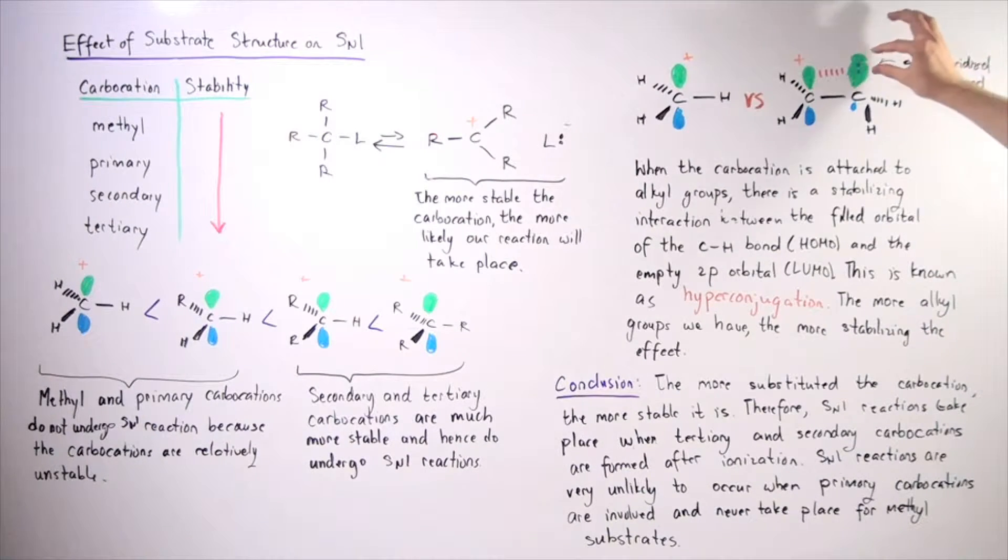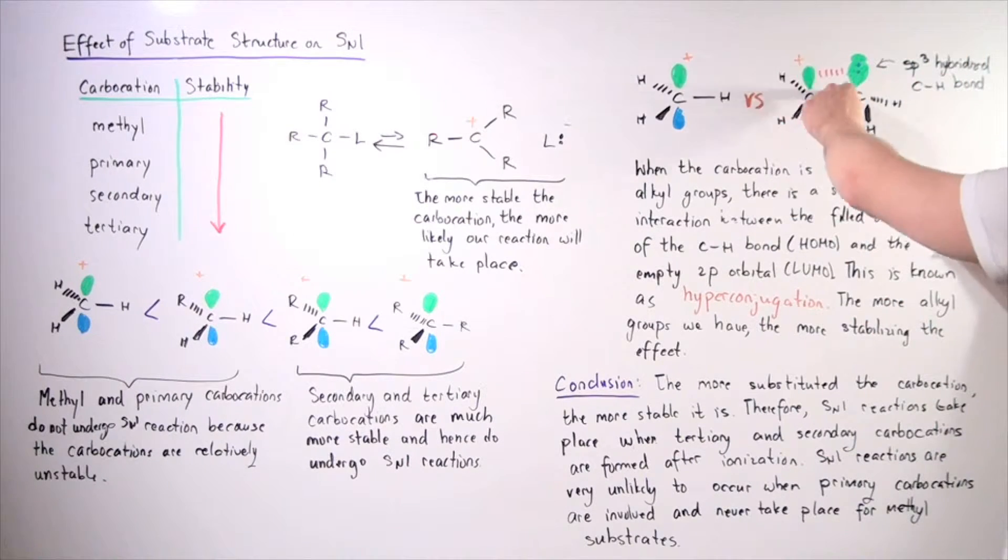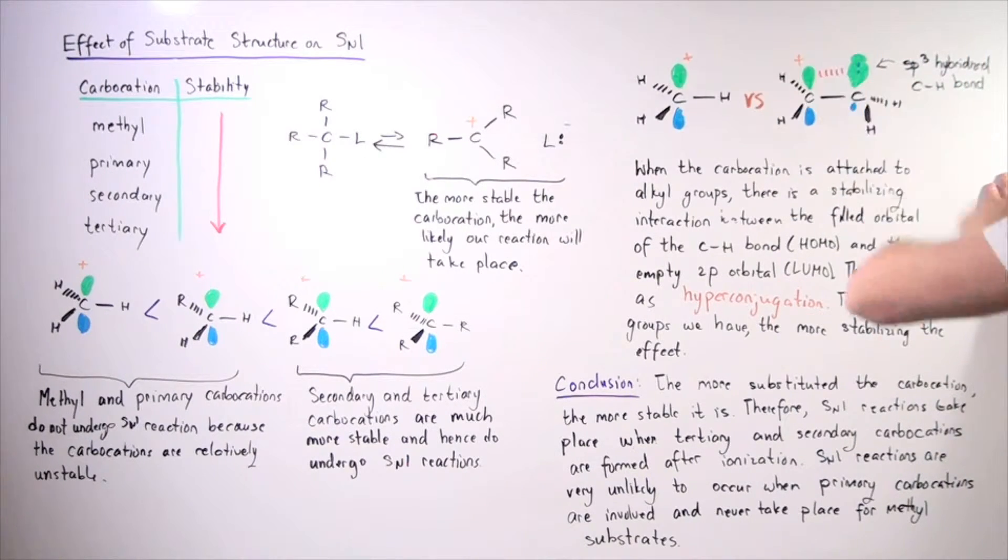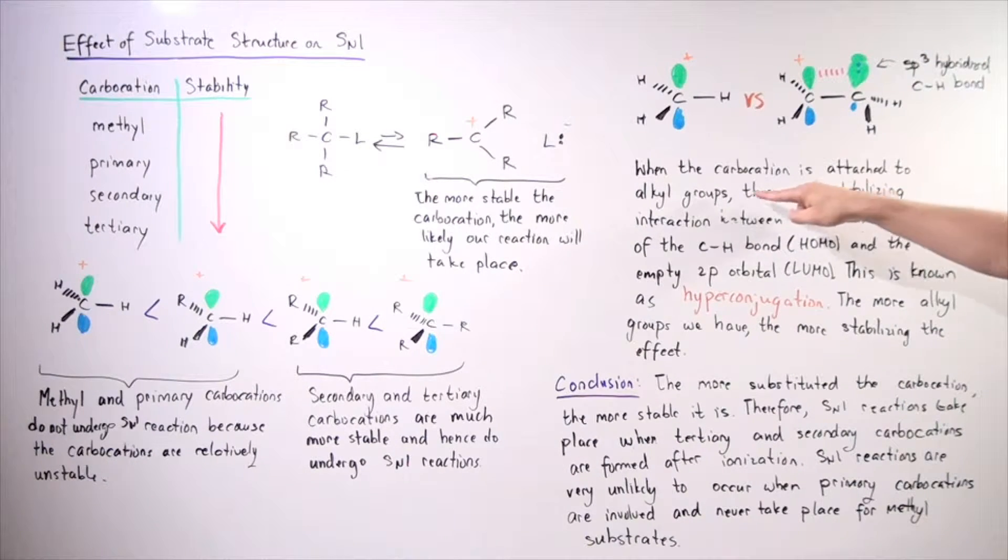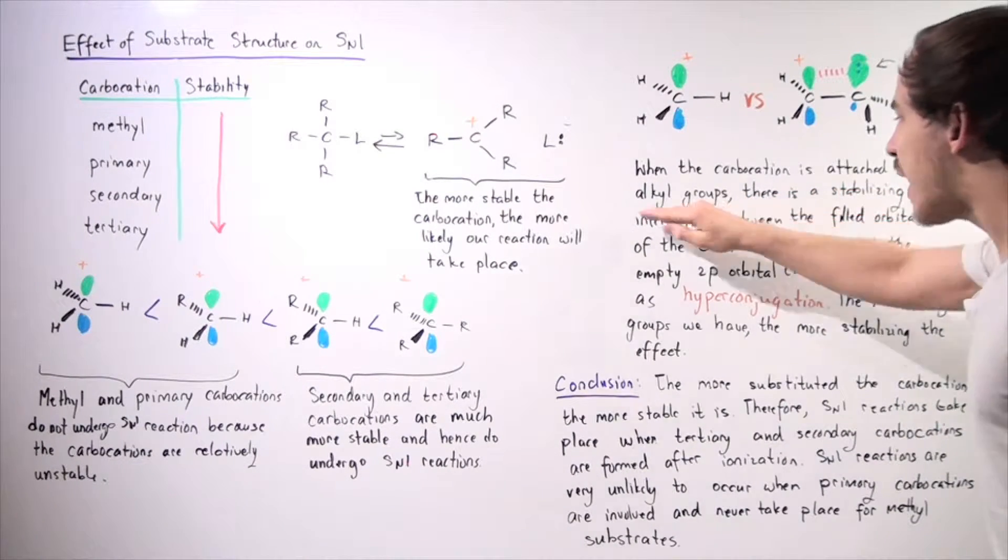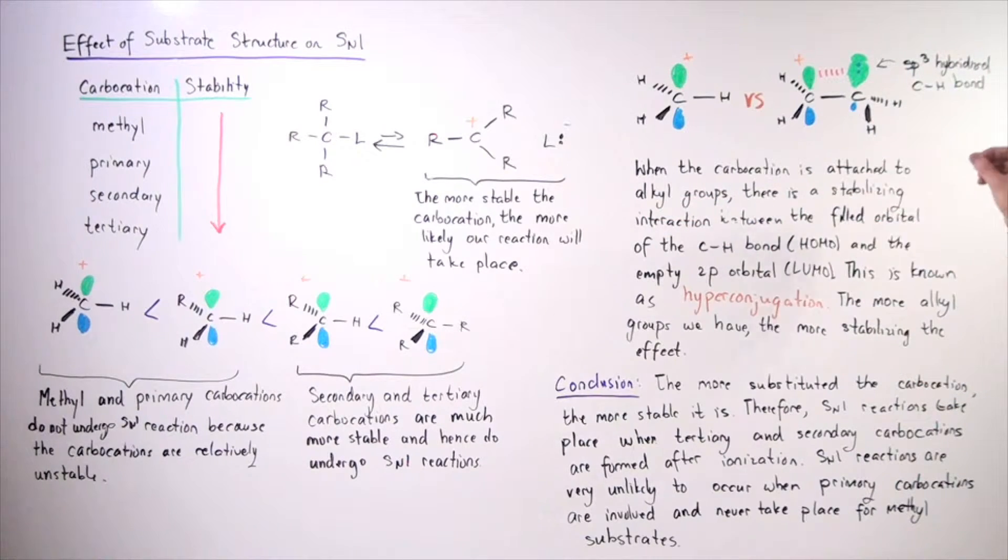Notice that we have our two electrons in this sp3 hybridized bond. So we have a filled sp3 hybridized bond, and here I have an empty 2p orbital. So what will happen? Well, when the carbocation is attached to this alkyl group, in this case the methyl group, there's a stabilizing interaction between the filled orbital of this CH bond, the sp3 hybridized orbital,